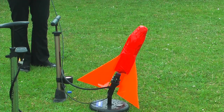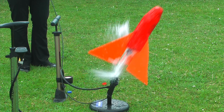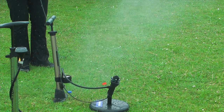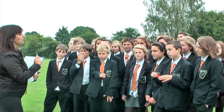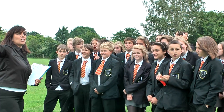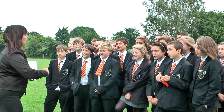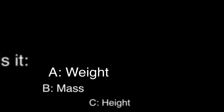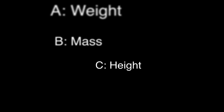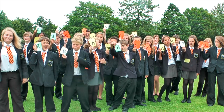And once launched, this rocket would carry on at constant velocity forever if no other forces acted on it. So the acceleration of an object depends on two variables. One is the resultant force. What's the other? Is it A, weight; B, mass; or C, height? The answer is B — mass.